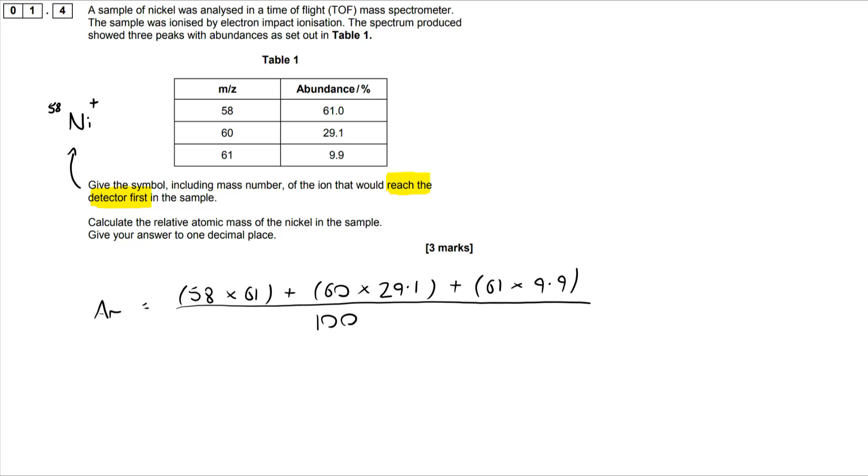Now again you can do all of the hard work, but there is a really simple error that can be made here and that's not reading the question fully. Because the answer is 58.9 to one decimal place, and that is what the question is insisting on.